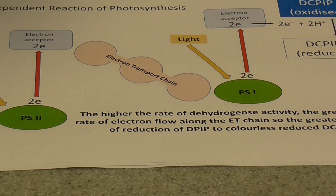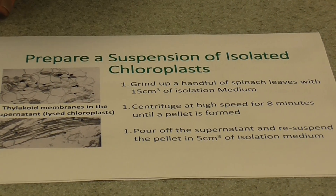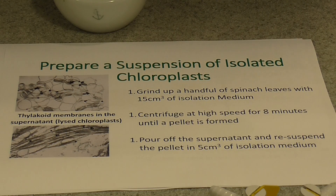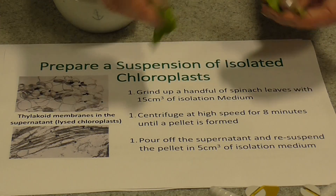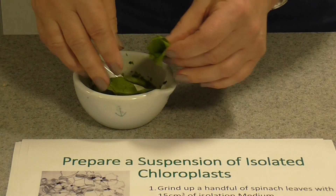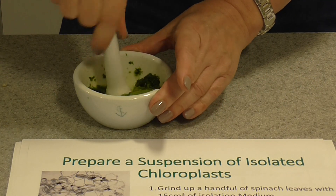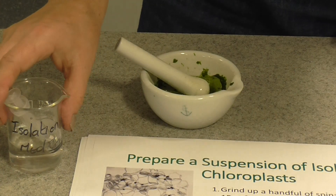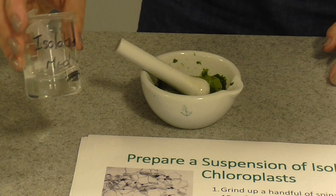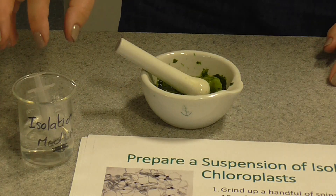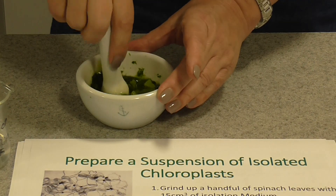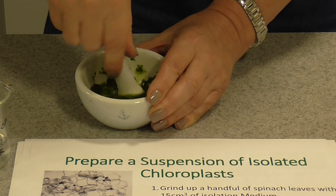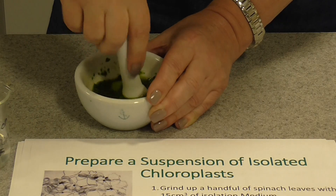The first thing you need to do is prepare a suspension of isolated chloroplasts. Get yourself a pestle and mortar — I've got a bag of spinach from the supermarket. Tear your spinach leaves up, put them in the mortar, add a pinch of sand, and then you need to use an isolation medium. Add 20 centimetres cubed of isolation medium, then grind up your spinach leaves to break open the cells and release the chloroplasts. You can also do this on a larger scale in a blender.